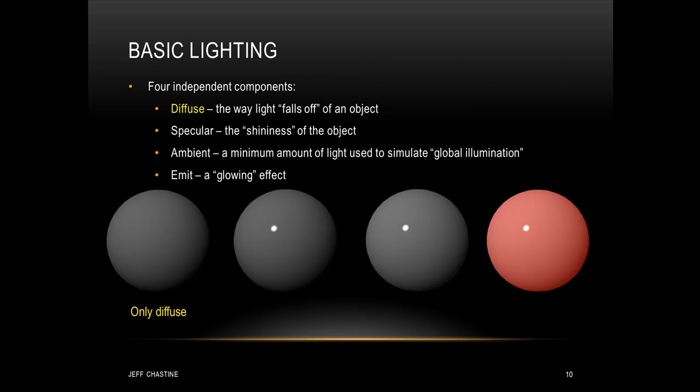In computer graphics we can break lighting down into four independent components. The first one is the diffuse component, and this is the way that the light falls off of an object. And you can see an example of that in the first image. Now looking at that image you can see that the surface looks porous, or it looks a little bit rough. In other words, it doesn't look like a hard object. Now moving on to the specular component, this is the shininess of the object. And that shininess is going to tell us how hard the surface of that object might be. So in the second image you can see that we've combined the diffuse component with the specular component.